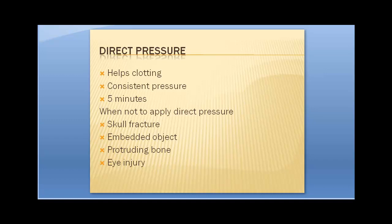Direct pressure helps clotting — consistent firm pressure for five minutes. However, there are times you don't want to apply direct pressure. For a skull fracture, you could push bone shards into the brain. For embedded objects, skull fractures, or protruding bone, make a donut bandage and place it around the uninjured areas — it'll help slow bleeding and start clotting. For an eye injury, cover the other eye too, because eyes track together and movement can do further damage.